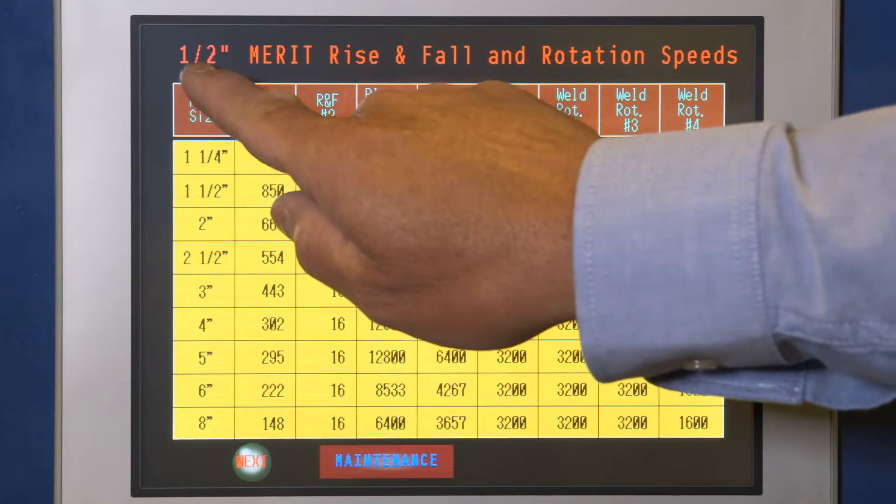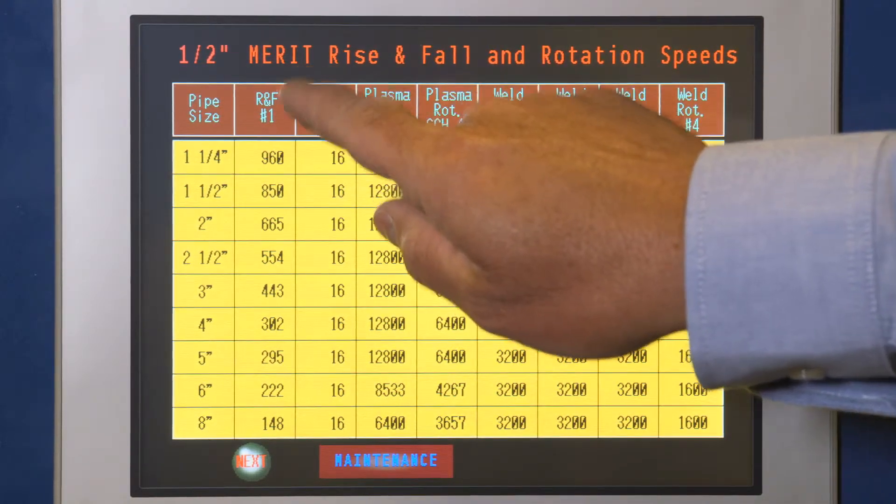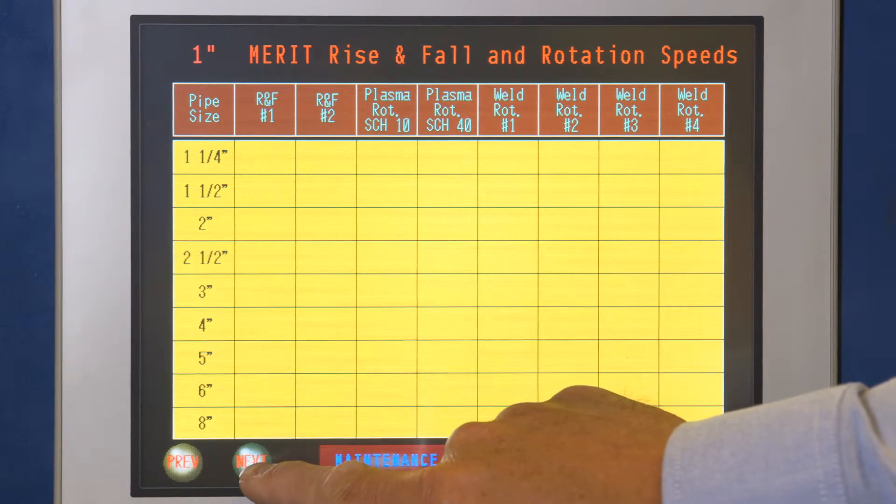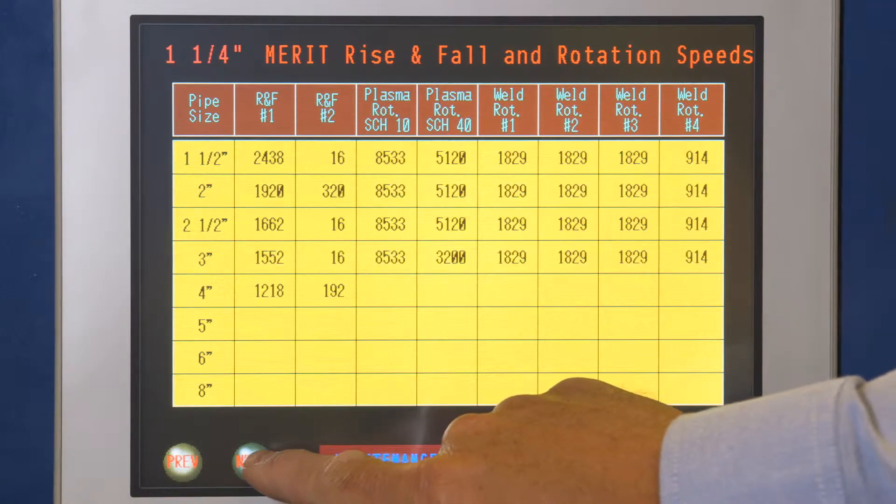Choose the rise and fall and the rotation speeds for the outlet manufacturer and outlet type being used. At the top of the screen, choose the outlet size.